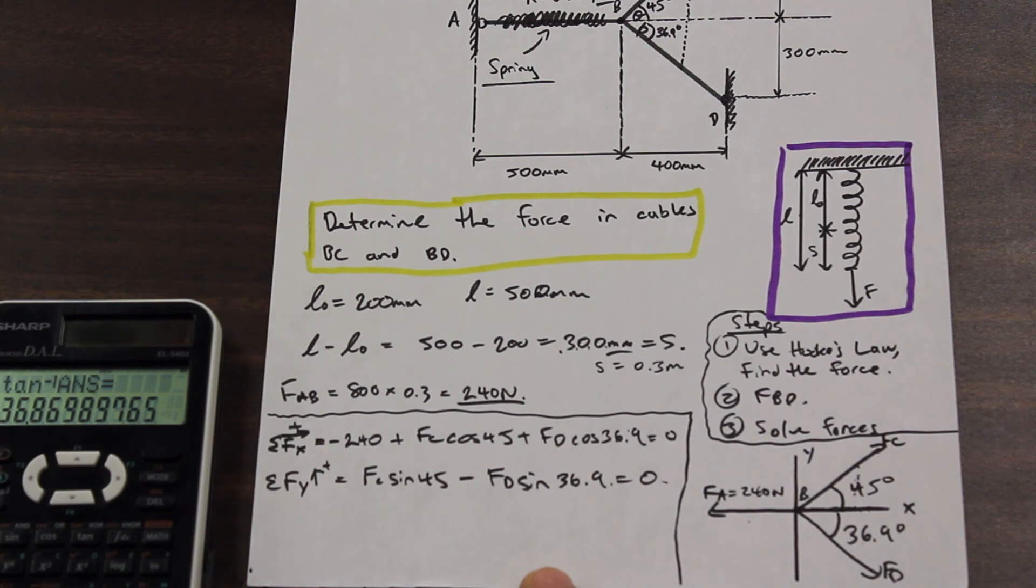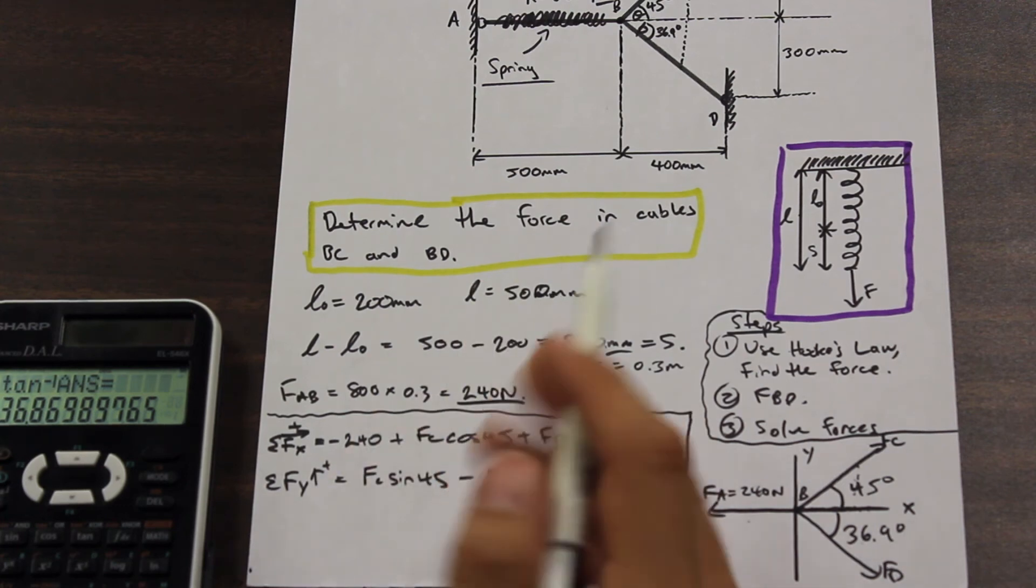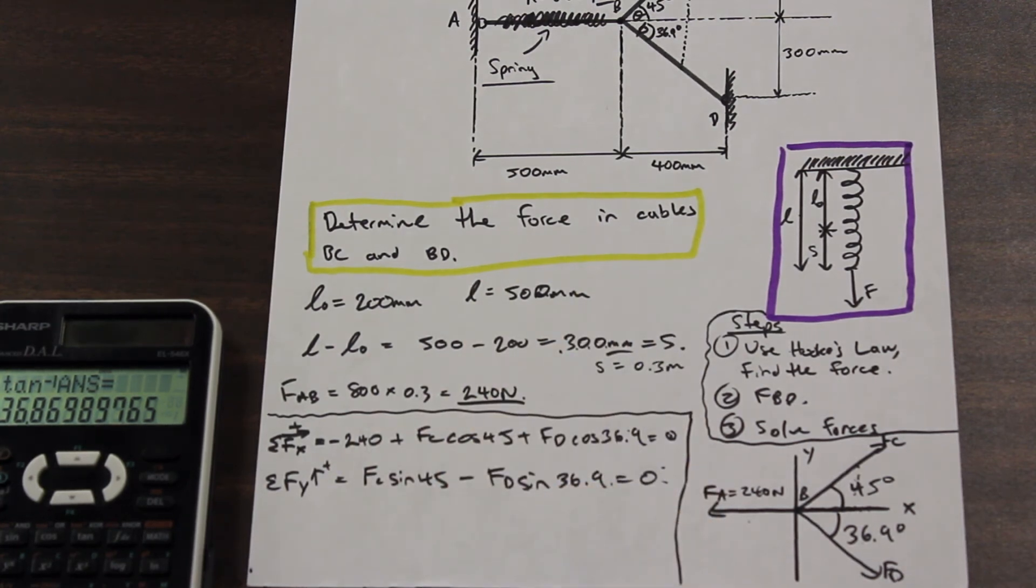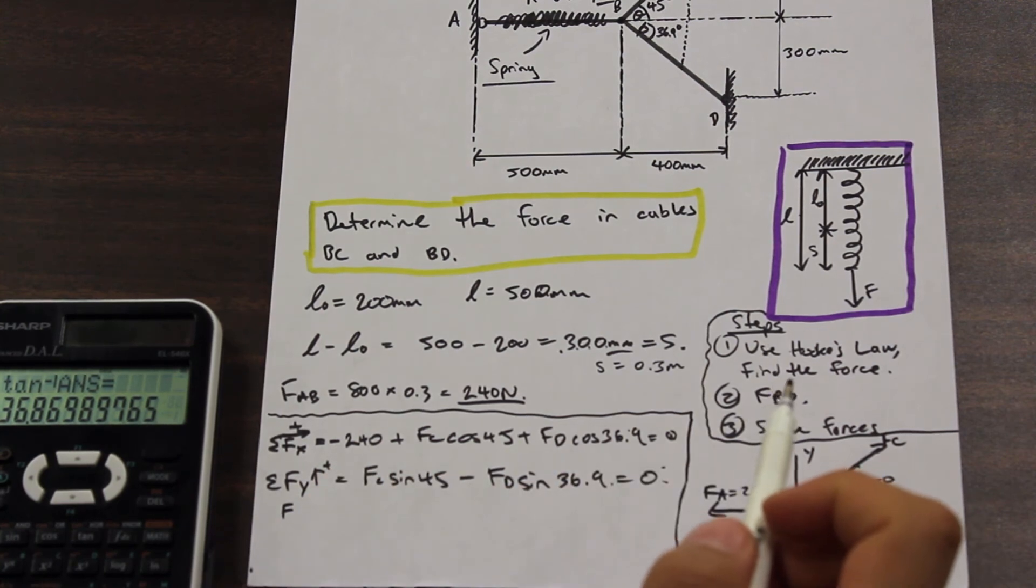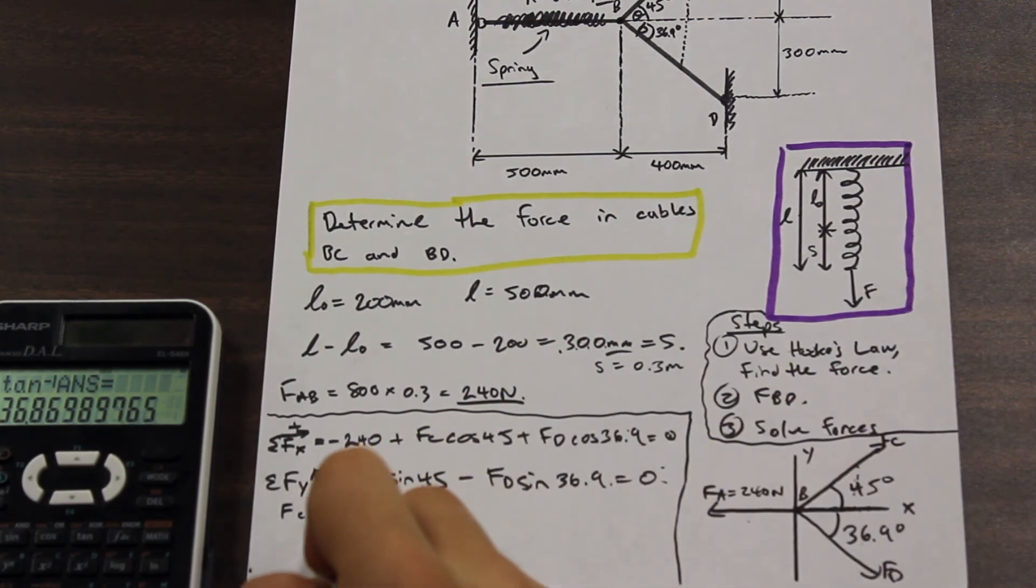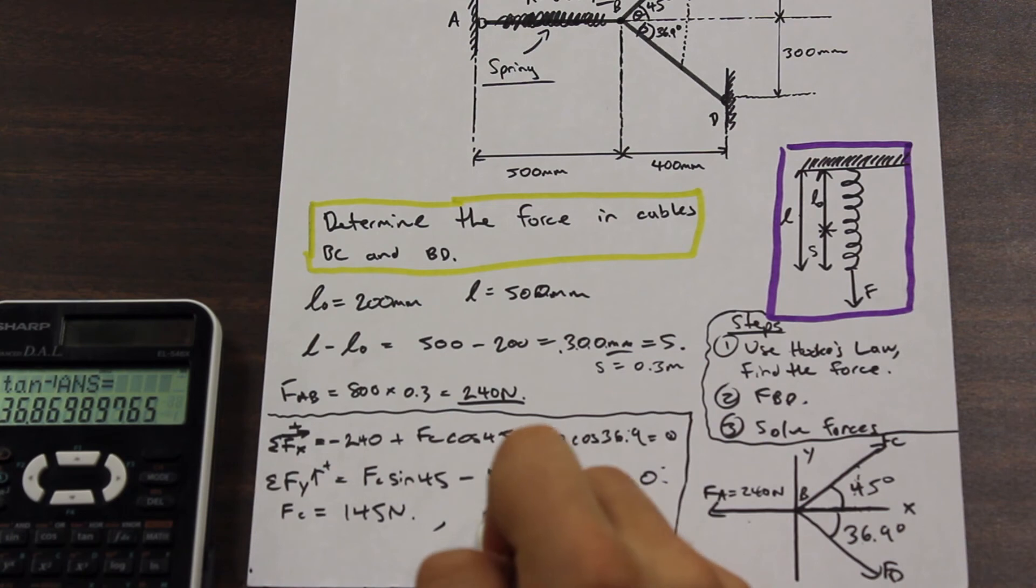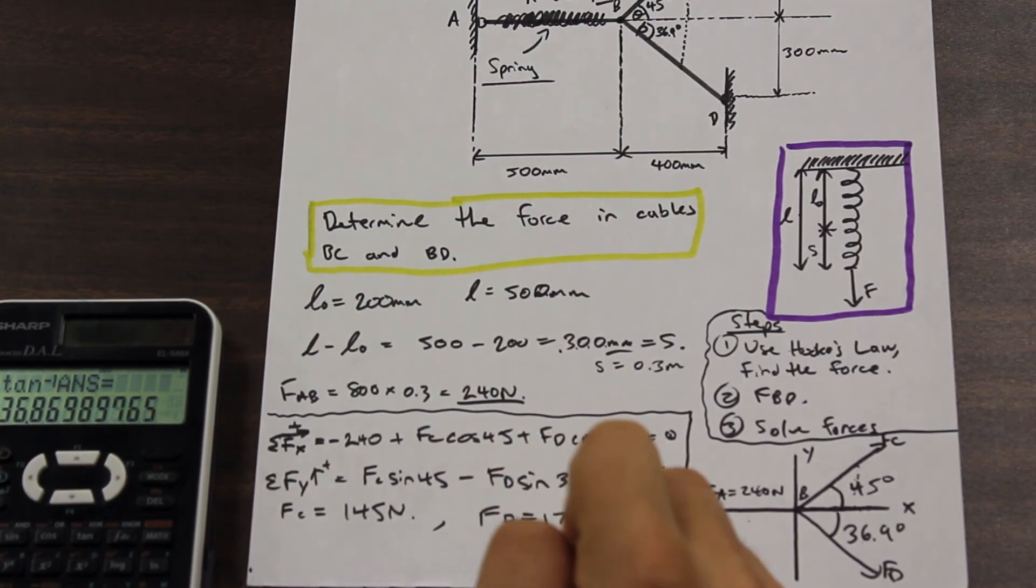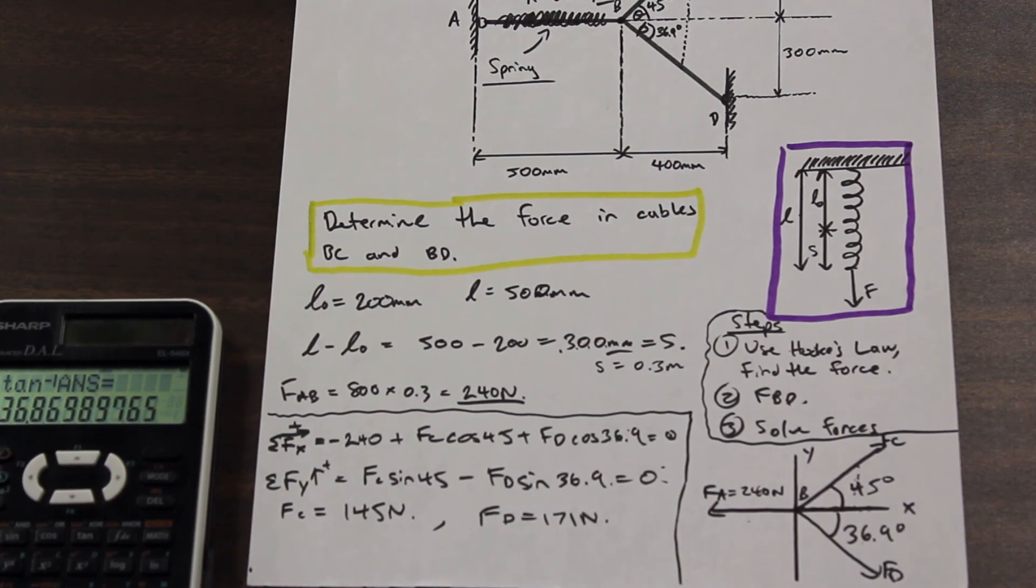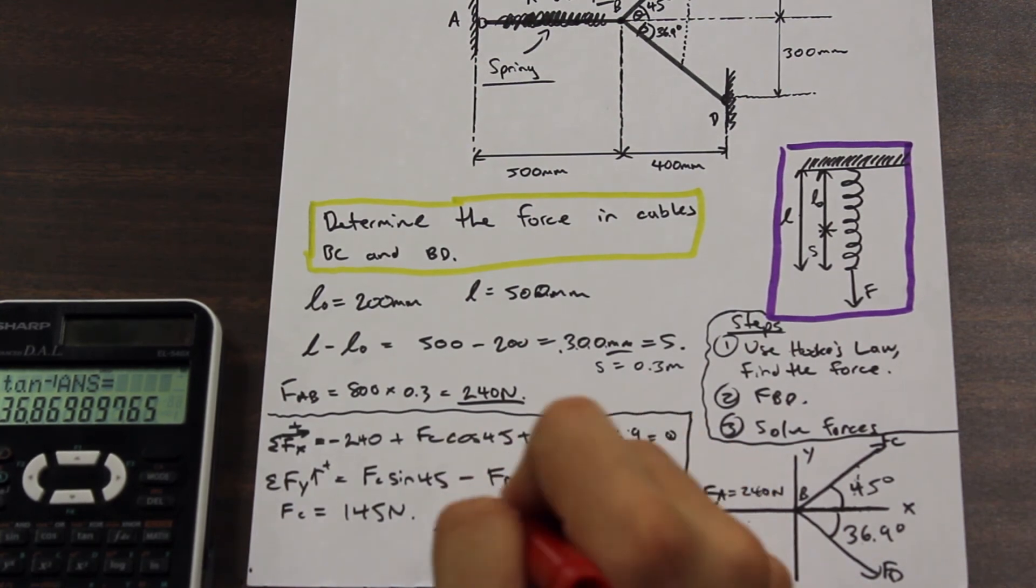So I kind of run out of room here so I'm not going to solve this system of equations. You should be able to solve a system of two linear equations like this, just substitute for one variable, plug it into the other equation, solve for the unknowns. So do that on your own please and I'll just give you the answers because yeah it's much quicker that way, you don't want to see me do basic math. So we have force C, force C is going to be equal to 145 newtons and we have FD is going to be equal to 171 newtons. Perfect.